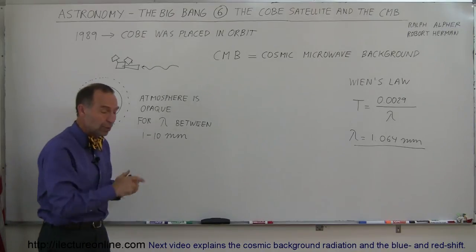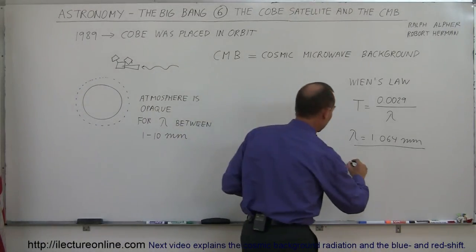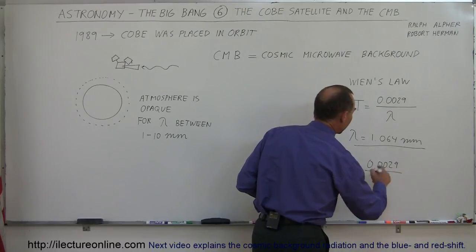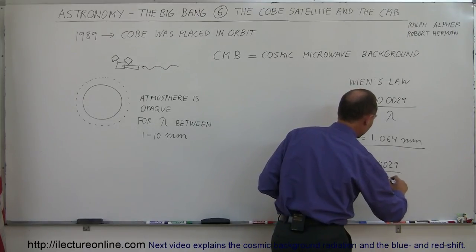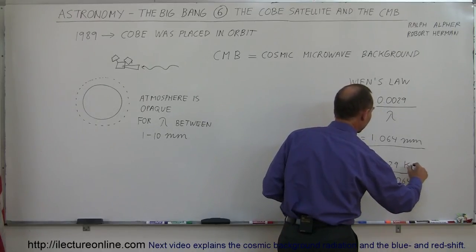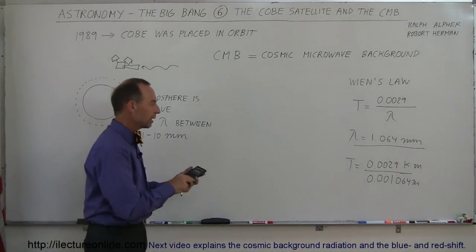So, when we plug that value into Wien's law, and let's do that. So, let's say that the temperature, therefore, is equal to 0.0029 divided by, and we have to convert that to meters, which is 0.001064 meters. And that would, of course, be Kelvin times meters. That's the constant, if we have the units correct. So, the answer would be in Kelvin.